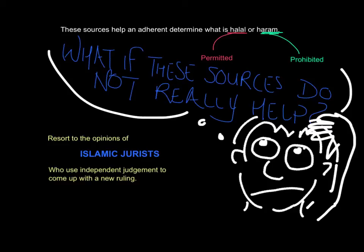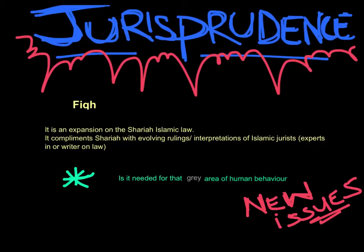But what if these sources do not help in a particular situation? Islamic adherents will first rely on the Quran; if there is no reference, they follow the Hadith and Sunnah. If they are still unsure, they resort to the opinions of Islamic jurists who use independent judgment to come up with a new ruling. This is what we call the process of jurisprudence, or fiqh — an expansion on Sharia Islamic law, based on the Quran and Hadith and Sunnah, that complements Sharia with evolving rulings or interpretations from Islamic jurists who are experts in or writers of the law.